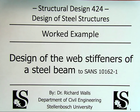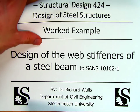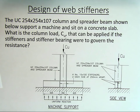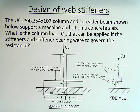Good day ladies and gents, welcome to this next video looking at the design of web stiffeners of a steel beam. We're going to be calculating to the South African steel design code SANS 10162 Part 1. This is part of the Stellenbosch University steel design course. Looking at the problem today, we need to design web stiffeners for a UC 254×254×107 column and spreader beam shown below, which support a machine and sit on a concrete slab.